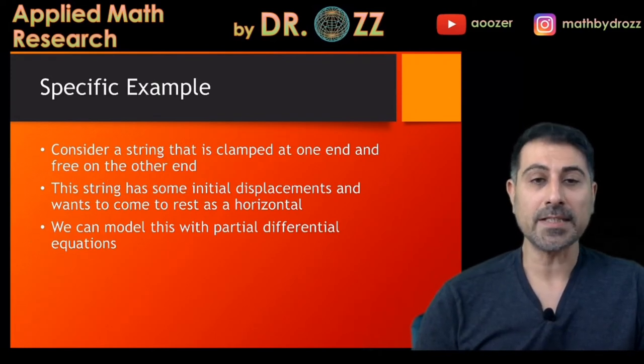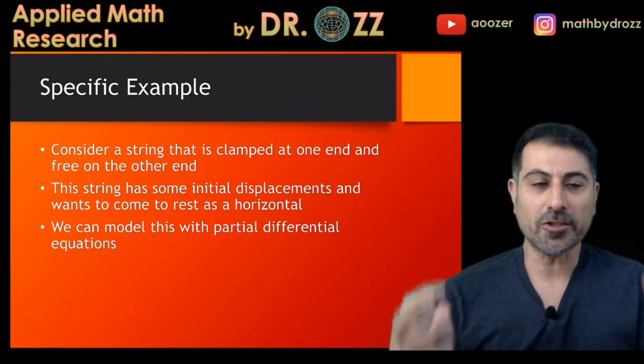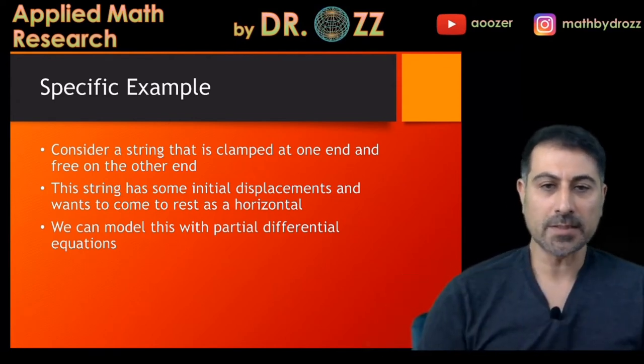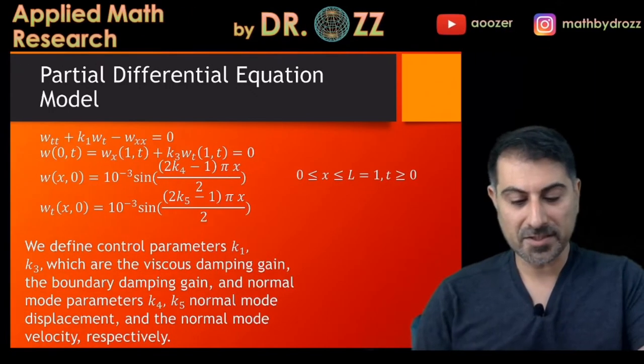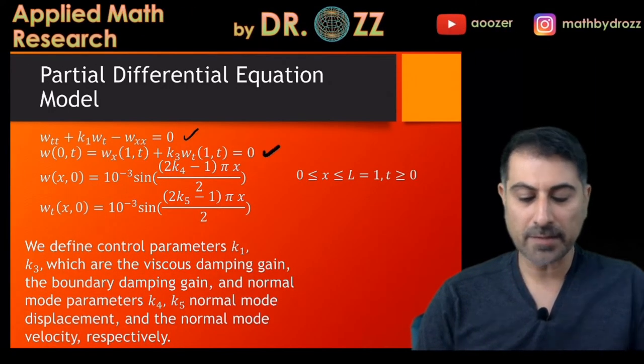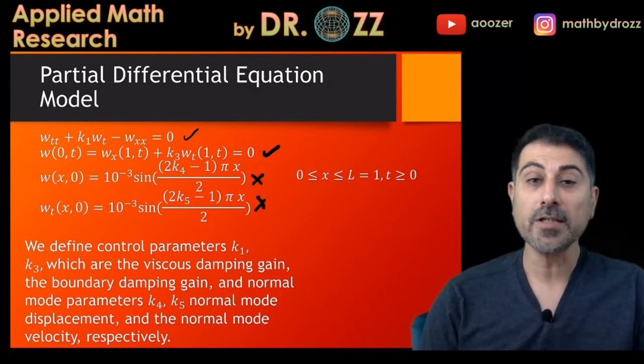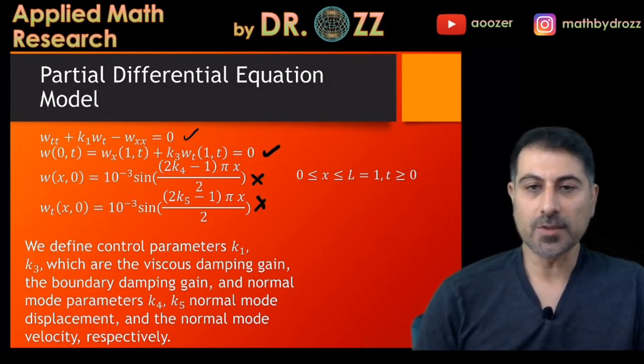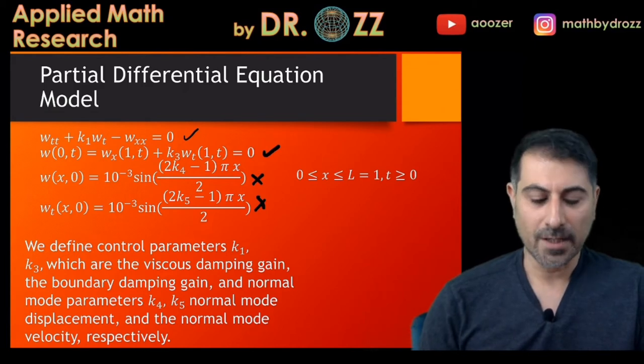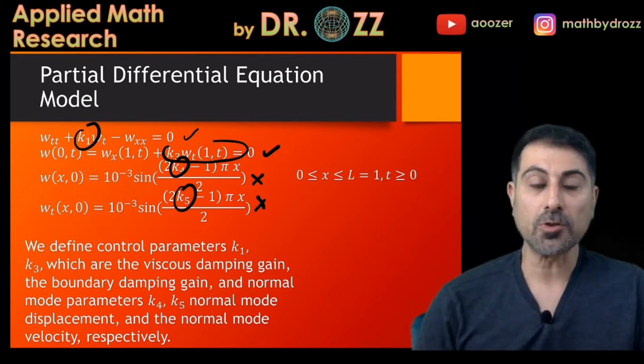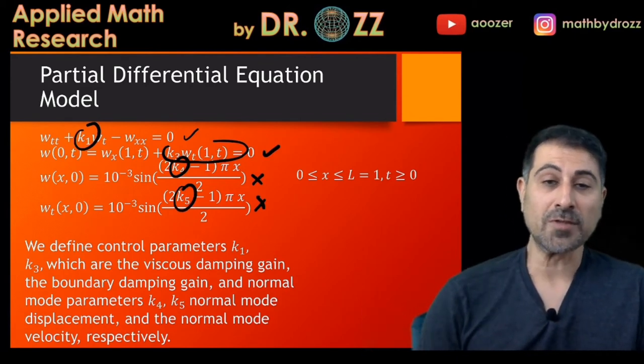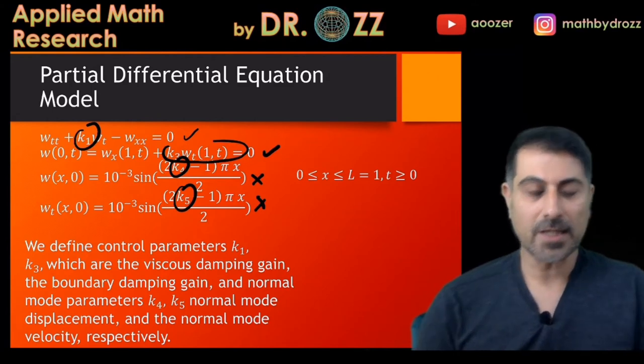Let's consider a specific scenario. Like we have a string that's clamped at one end and free on the other end. And the string has some initial configuration displacement and velocity provided. We can model this with partial differential equation. Here is the partial differential equation model with boundary conditions and initial conditions here. So W stands for the displacements on the string. So we have a boundary controller and we have some control parameters here. And what we're doing here is to control any vibration, in fact, on the string by using k1 and k3.